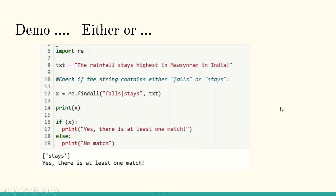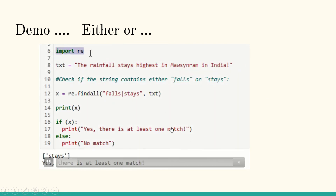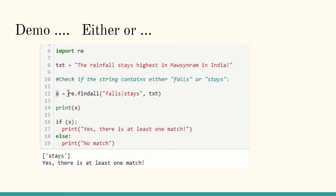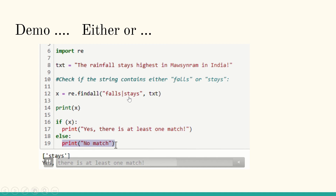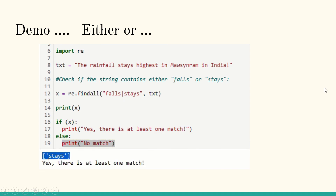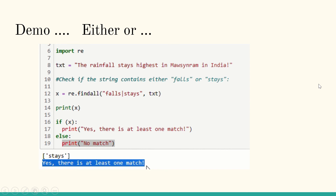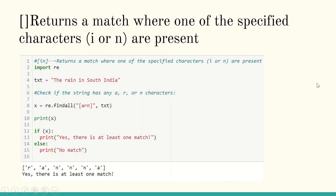The demo confirms: re is imported, the text is given, and find-all is used with 'falls|stays'. Find-all is one of the most useful options in regular expressions — it supports multiple parameters and flags. Either of the two words being present returns a match, and the result is printed as 'stays'.